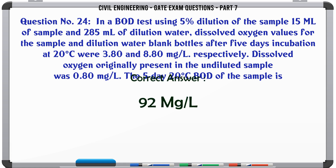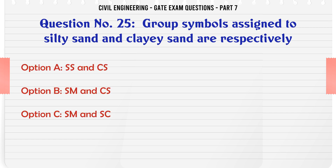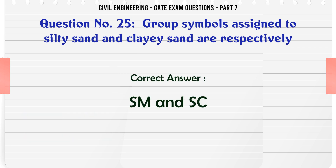Group symbols assigned to silty sand and clayey sand are respectively: A) SM and SC, B) SM and SC, C) SM and SC, D) MS and SC. The correct answer is SM and SC.